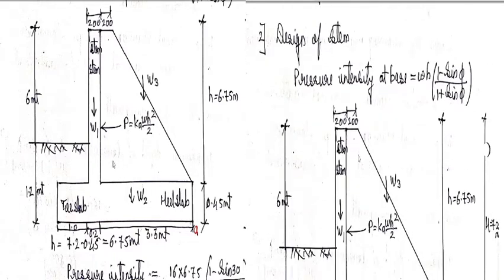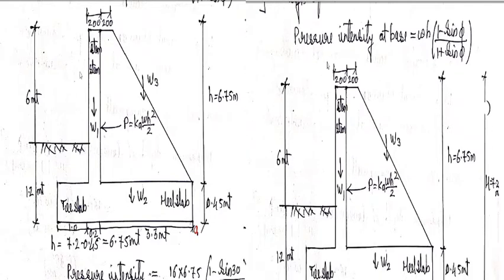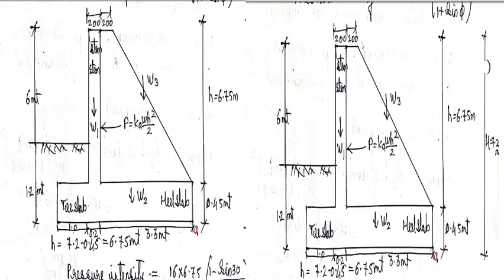Now let us see the design of stem. So the pressure intensity at the base is given by omega H 1 minus sin phi and plus sin phi. Let us see the diagram here. So height of the stem will be from here to here from the base of the slab to total height is 6 plus 1.5 that is 7.2 meter. As we know the base slab is 0.5, so height of the stem is 6.75 meter.